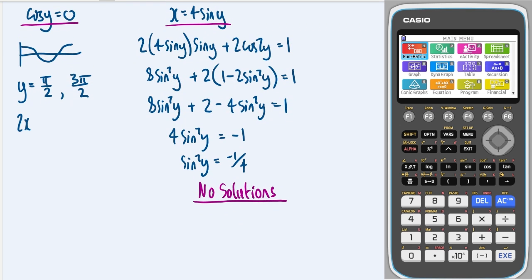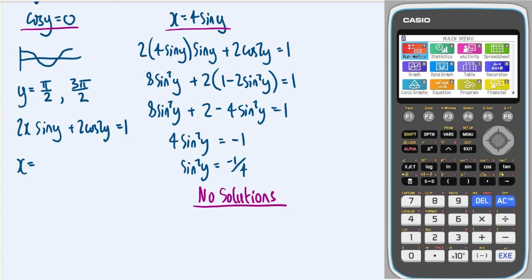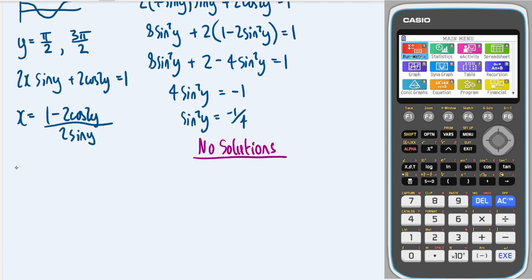OK, so our original equation was 2x sine y plus 2 cos 2y is equal to 1 so I get x equals 1 minus 2 cos 2y all over 2 sine y so I'm going to sub in y is equal to pi over 2 and this is going to give me x is equal to pi over 2 times 2 is pi cos of pi is minus 1 times minus 2 is plus 2, 1 plus 2 is 3, sine of pi over 2 is 1 times by 2 is just 2 so there is one of my tangents.